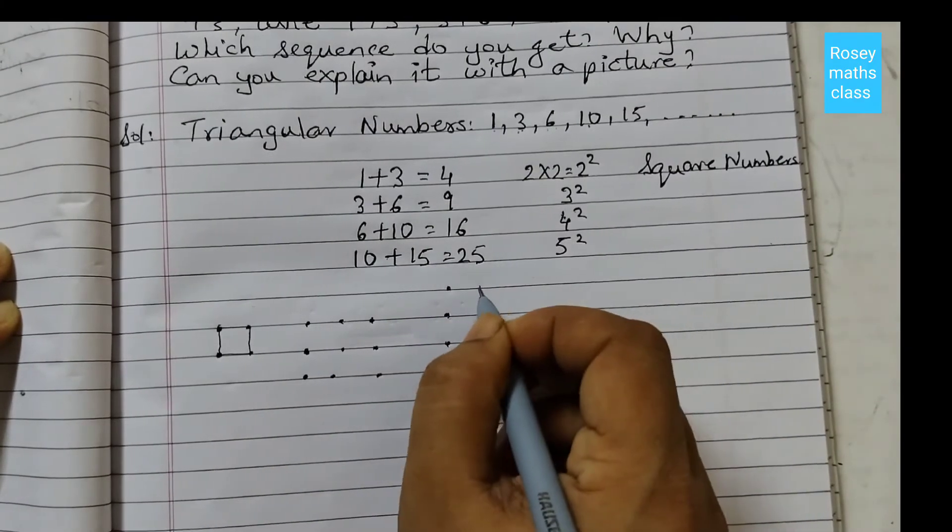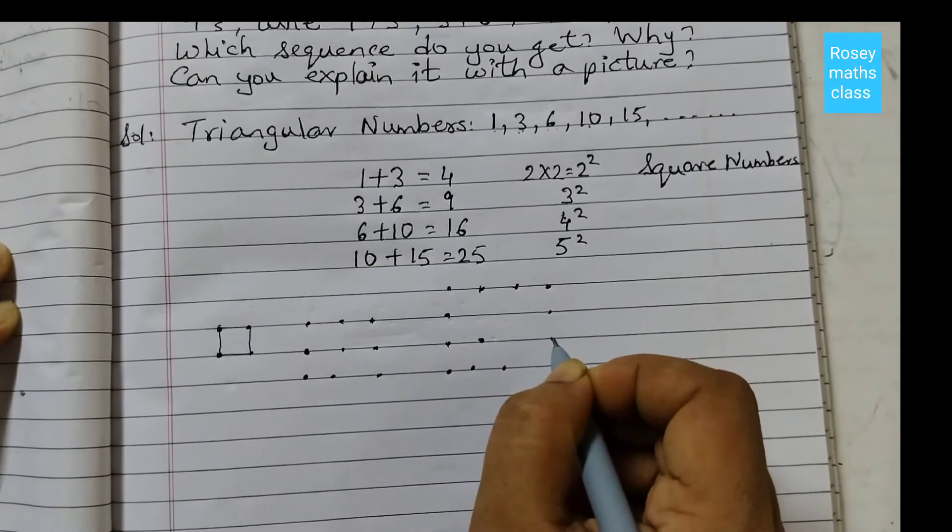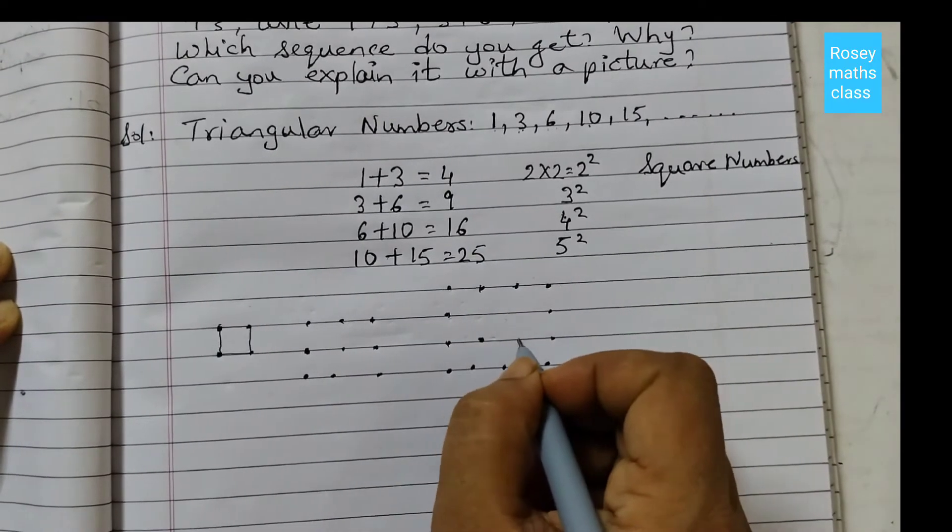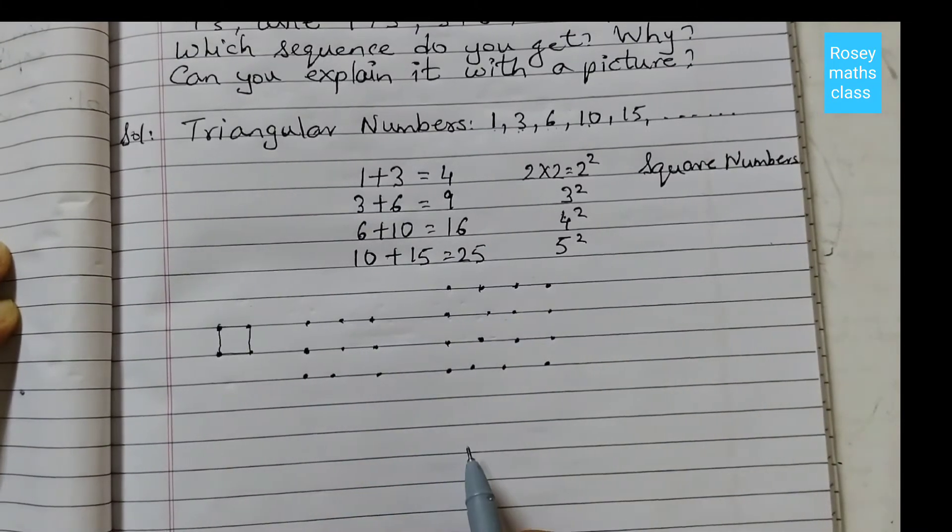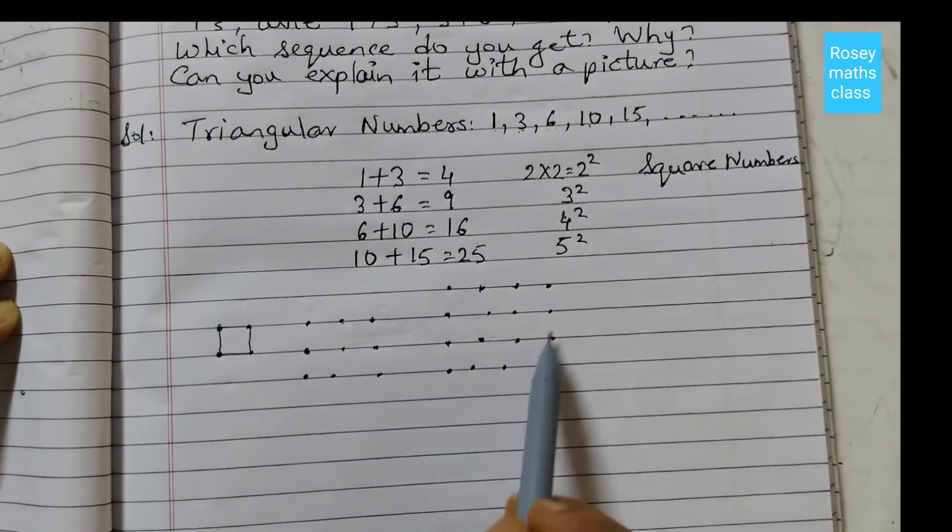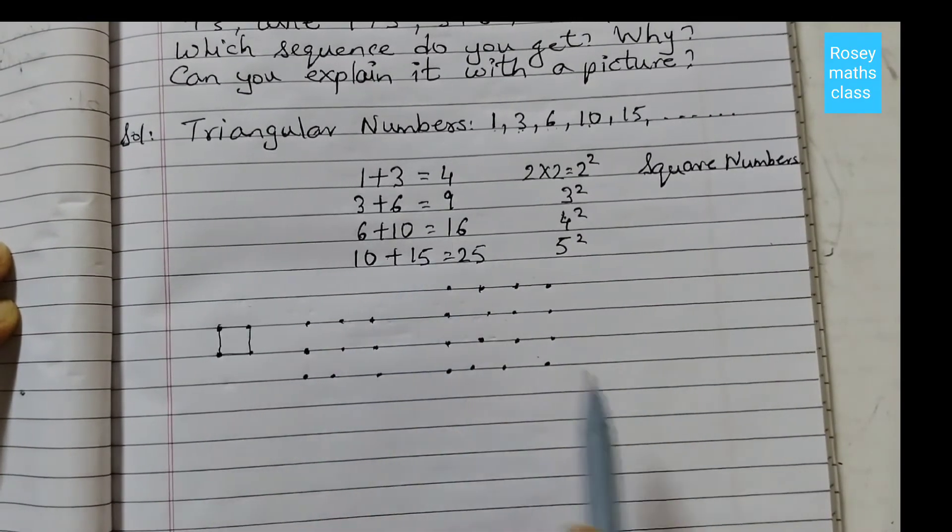So 1, 2, 3, 4, 5, 6, 7, 8, 9, 10. This is again a square. So this is one triangular number, second triangular number. Both add up to give a square number.